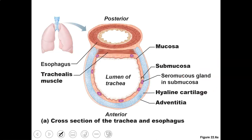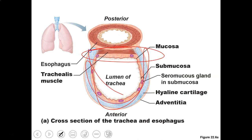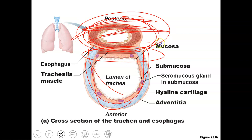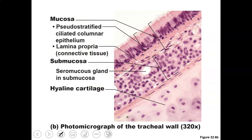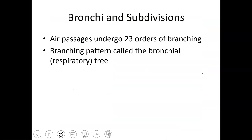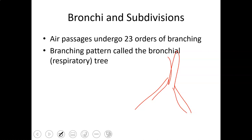The trachea is the tube going down. It has C-shaped rings of cartilage with muscle on the back to keep the airway open. Here you can see the cartilage and the lining of the trachea. Once the trachea enters the chest it immediately branches off.